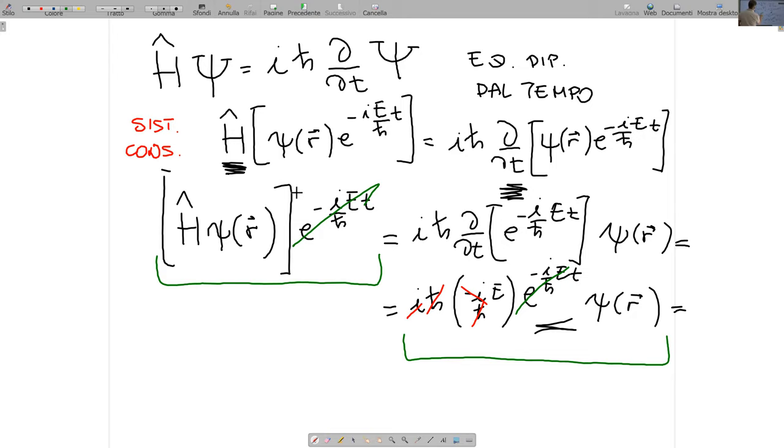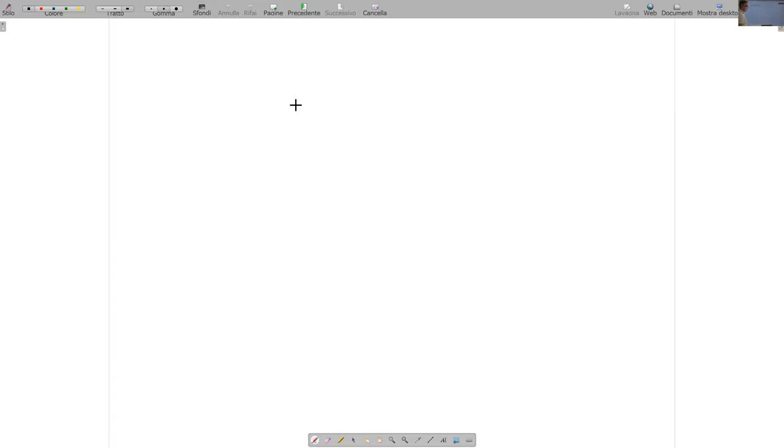Allora, il risultato è che io rimango con questo termine qui deve essere uguale, questo termine qui mi rimane da E. Cioè rimango con un'equazione che mi dice che l'operatore di H agito alla soluzione d'onda dipendente dal tempo, la psi piccola deve essere uguale a un numero, cioè questa quantità E per la soluzione psi stessa.